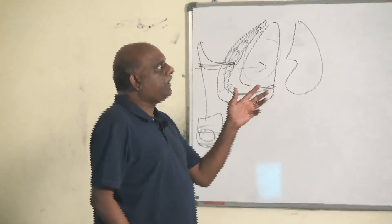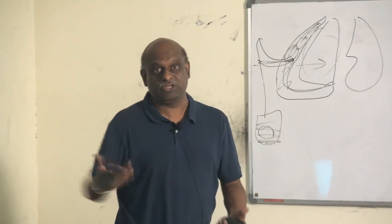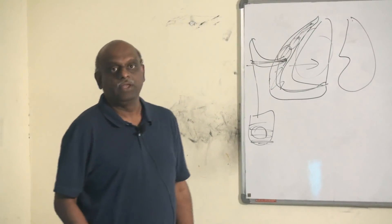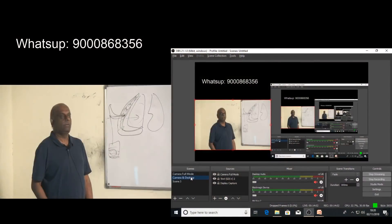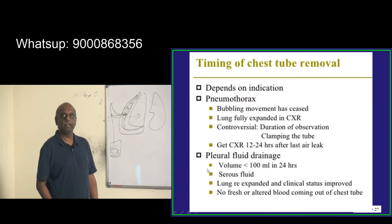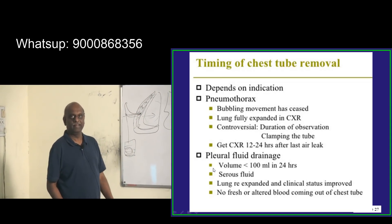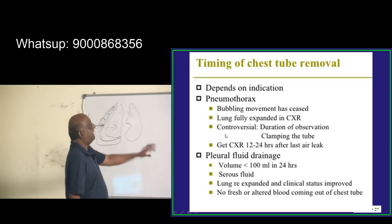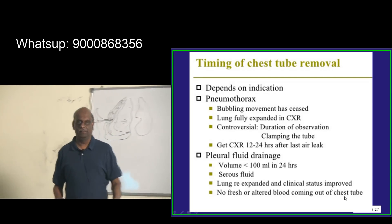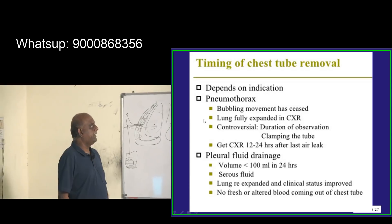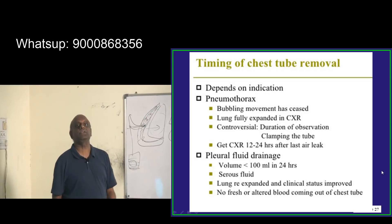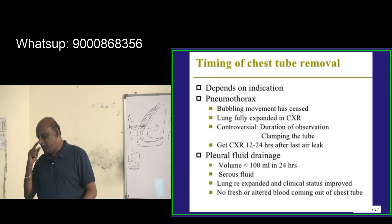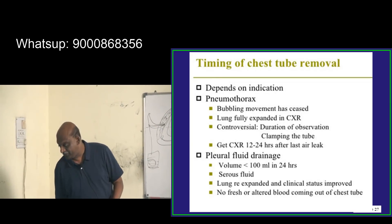When do you remove the chest tube? When movement stops in the underwater seal, the lung is fully expanded. You need to get a chest X-ray 12 to 24 hours after the last air leak. These are the important indications for removing the intercostal drainage tube.